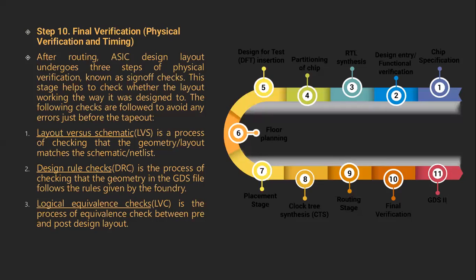In the final verification, they check using timing congestion techniques whether the placement is occurring rightly and the routing is done properly. Before tape-out, the following errors are avoided such as layout versus schematic LVS, design rule checks DRC, and logical equivalence checks LEC. These things are checked in the final verification steps before converting this into a GDSII file.